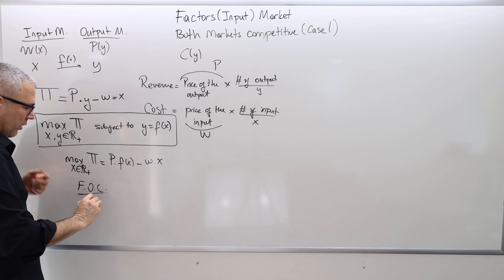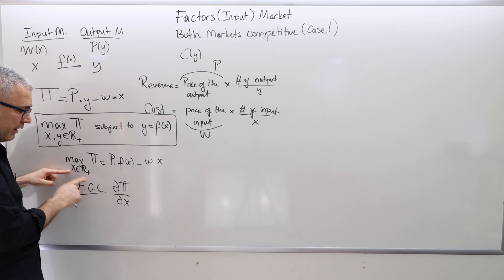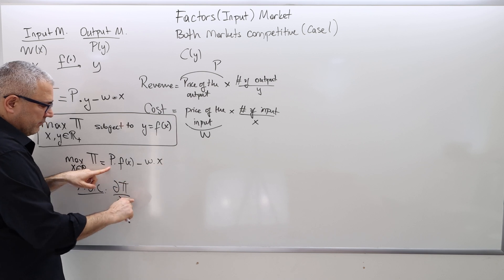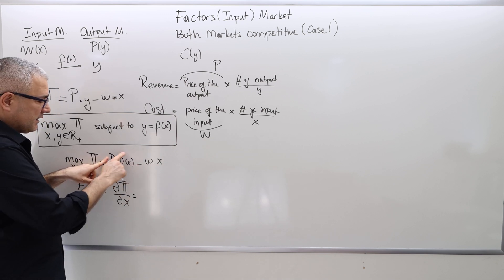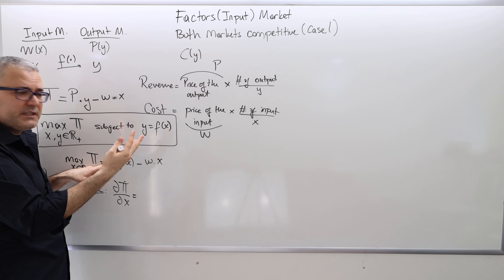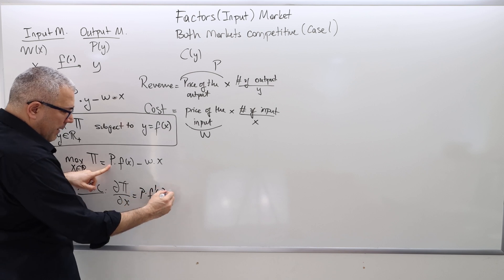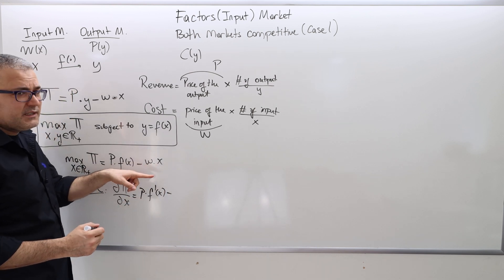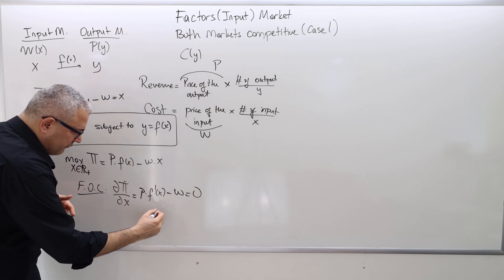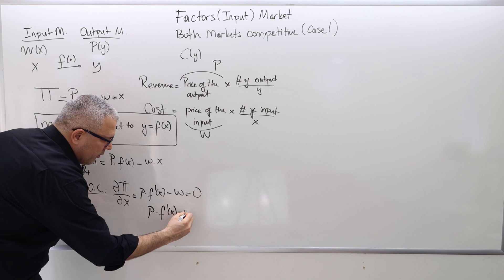The first-order condition: take the derivative of the profit function with respect to the choice variable X and set it equal to zero. P is a constant and F(X) is a function, so the derivative is P times F′(X) minus W equals zero. Sending W to the other side gives: P · F′(X) = W.